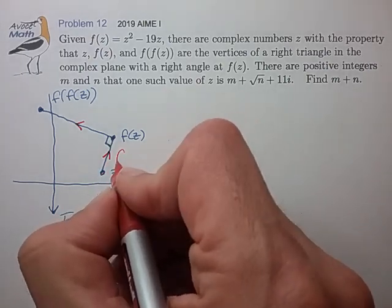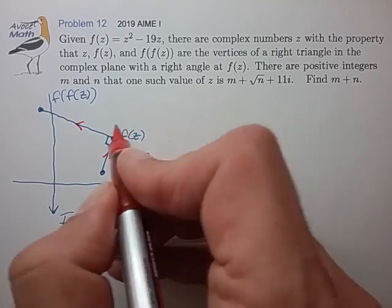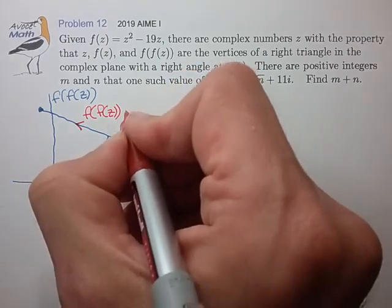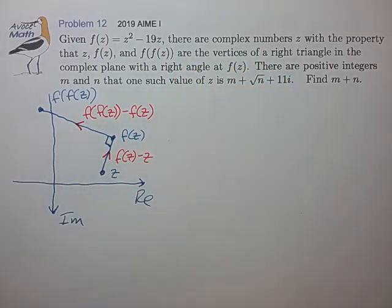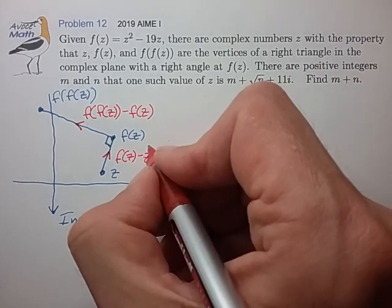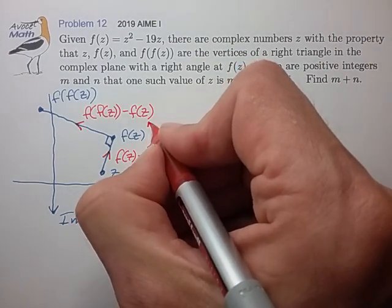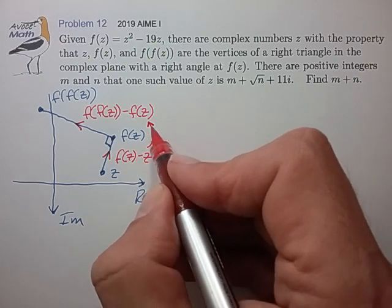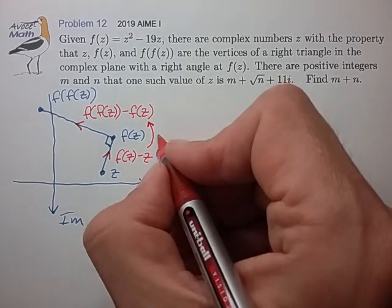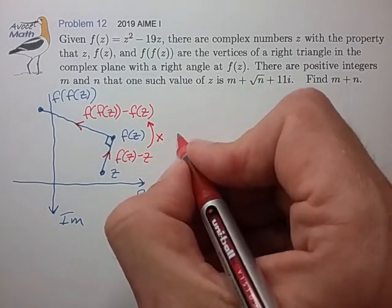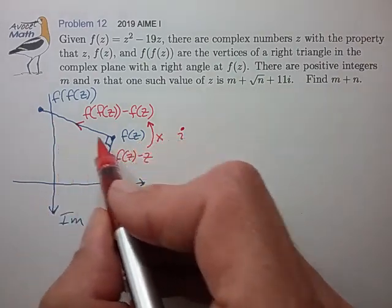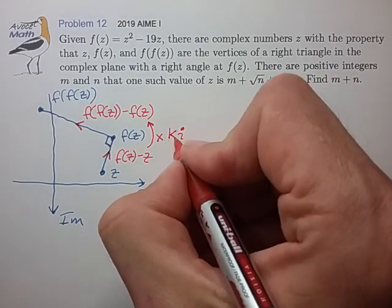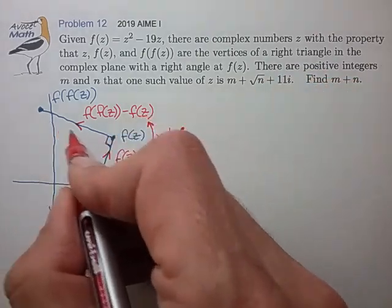Let's write the first line segment as f(z) minus z, and the second line segment as f(f(z)) minus f(z). The problem statement is that we can get from this line segment to the other by performing a 90-degree rotation. By DeMoivre's theorem, a 90-degree rotation can be represented as multiplication by i, but there's also a scale factor because these line lengths don't necessarily have to be the same.